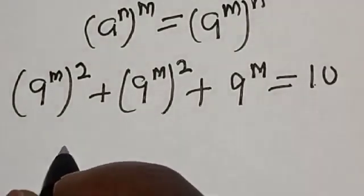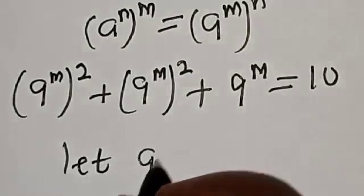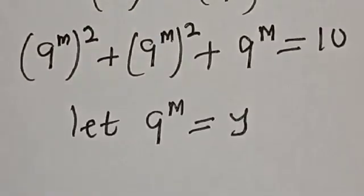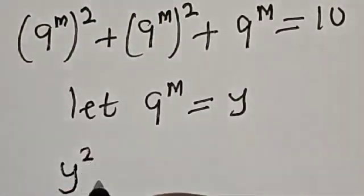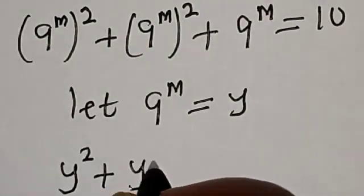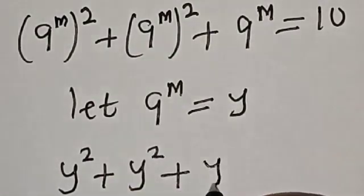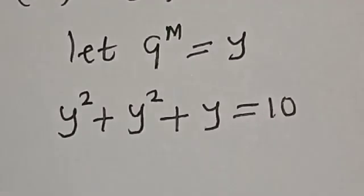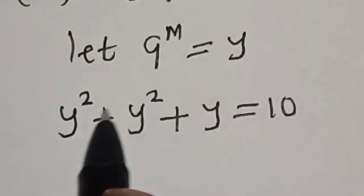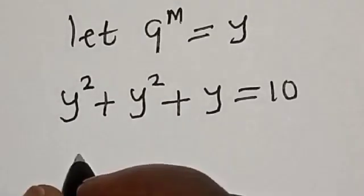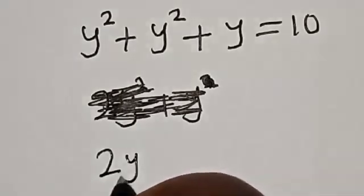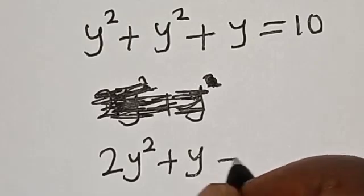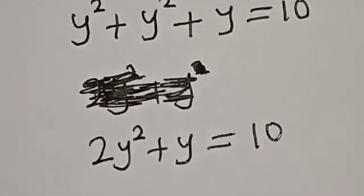Now, let 9 raised to power m equal y. Then we have y squared plus y squared plus y is equal to 10. This gives us 2y squared plus y is equal to 10.